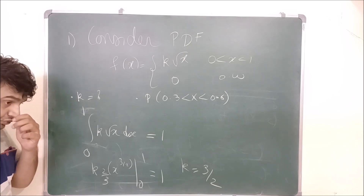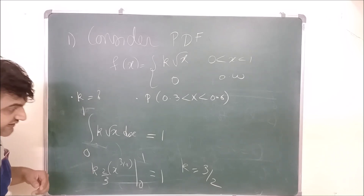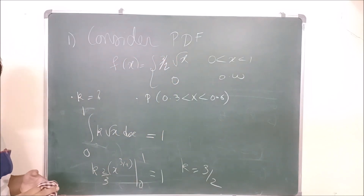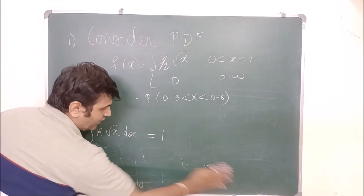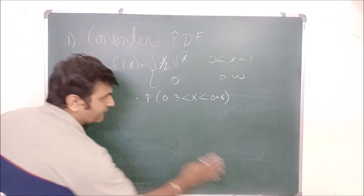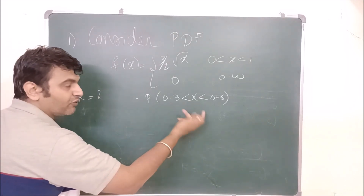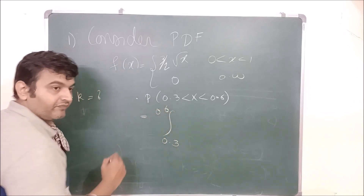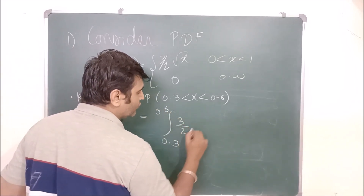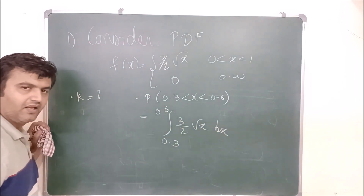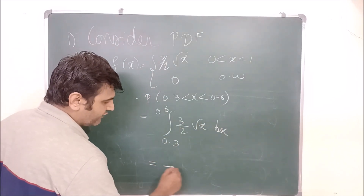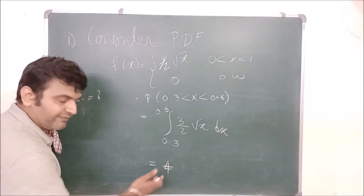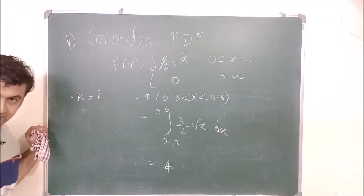Check my calculations — if it is wrong, you can correct me in the comment section. So for this to be a PDF, K has to be 3/2. Now for the next part, I want to evaluate the probability from 0.3 to 0.6. We know this is the integral from 0.3 to 0.6 of (3/2)√x dx. I think you are mature enough to solve this — if you have time, comment the answer in the comment section.